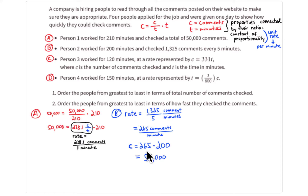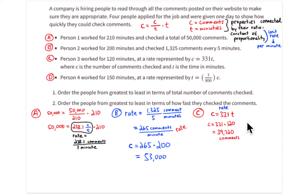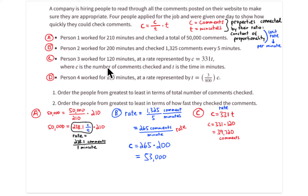For applicant C, they give you the equation: comments equals 331 times the time. That 331 is the rate in comments per minute. To get the total number of comments, multiply 331 by 120 minutes, which gives 39,720 comments. So applicant C looked at 39,720 comments in 120 minutes at 331 comments per minute.